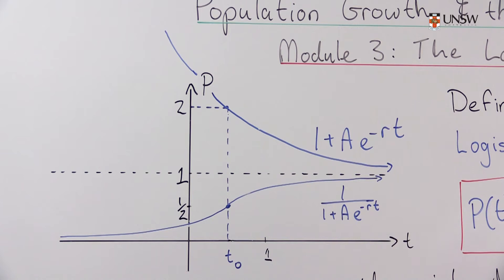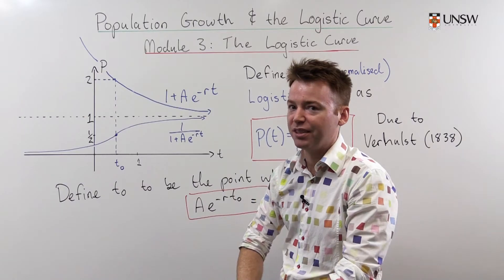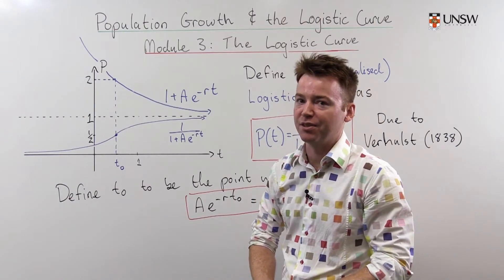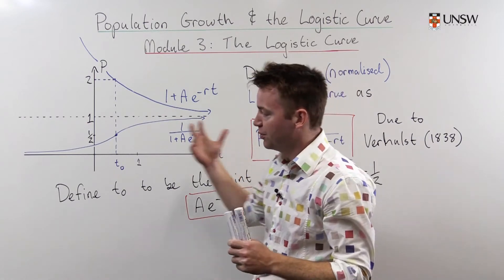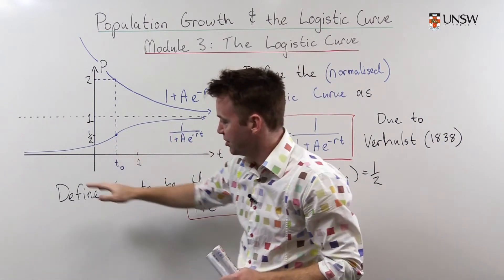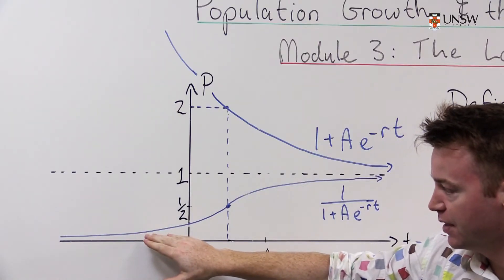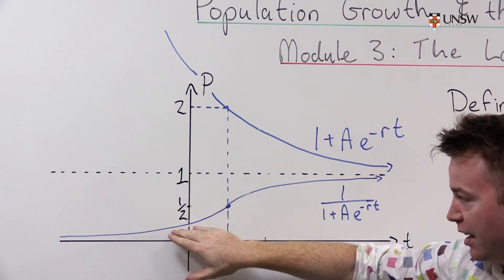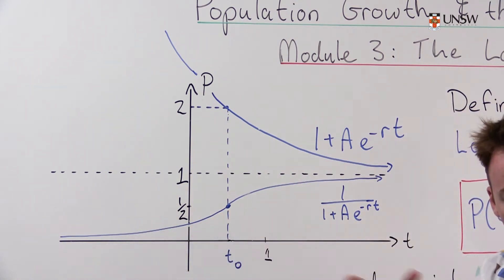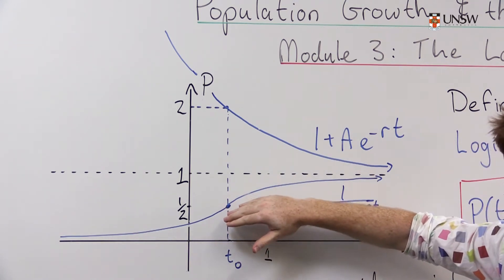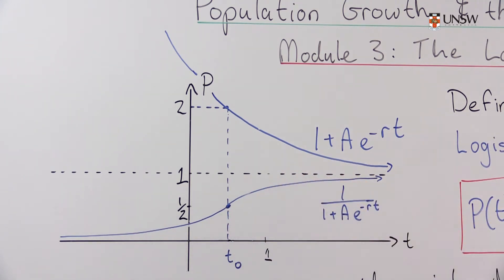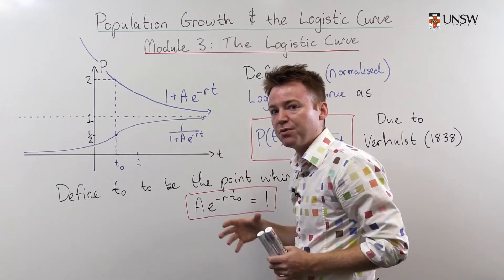The logistic curve has many applications in diverse fields. Not only can it be used to model population but it can also be used to model the growth of a tumor. Initially a tumor will grow quite slowly and then sooner or later the exponential nature of the growth will kick in and the tumor will grow quickly until it starts being limited by physical factors. Then growth peters out as it reaches its maximum possible size.